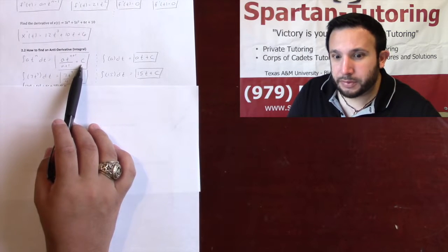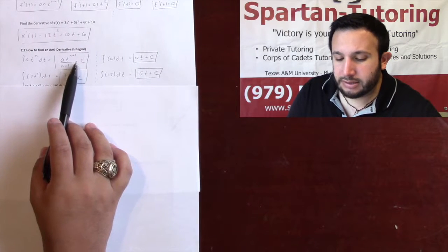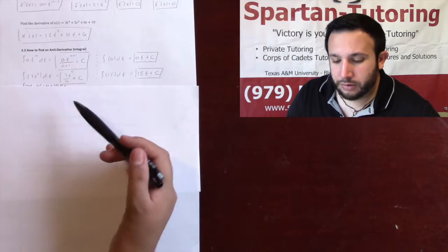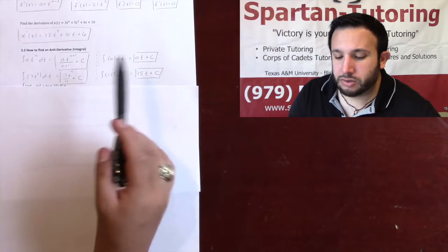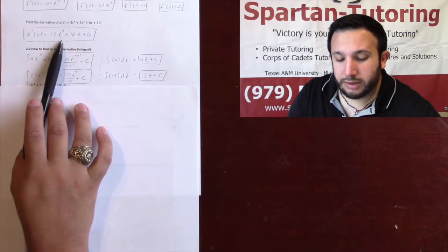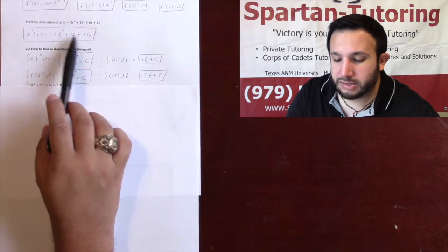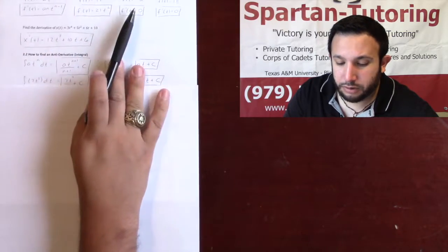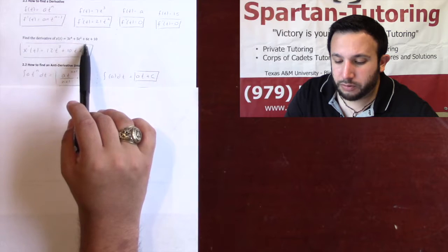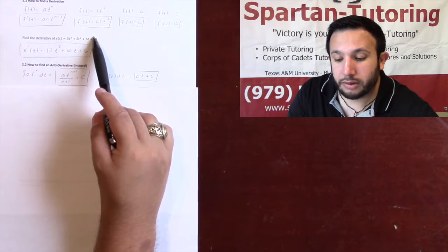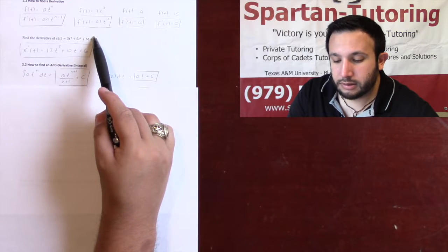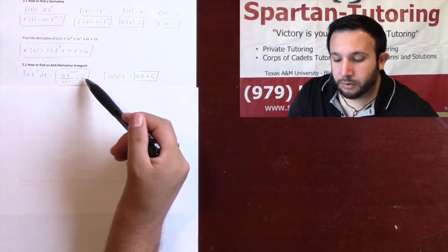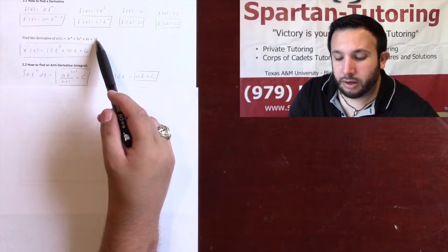And then you're going to write this plus constant c. The reason you need to write this plus c is because whenever you take the antiderivative of the derivative, it needs to go back to its original function. So let's say I took the antiderivative of this guy up here, the 12t cubed plus 10t plus 6. What you would be left with is 3t to the 4th plus 5t squared plus 6t plus 10. Well, except you wouldn't have the plus 10, because there's nothing there. And so that's what the c stands for.